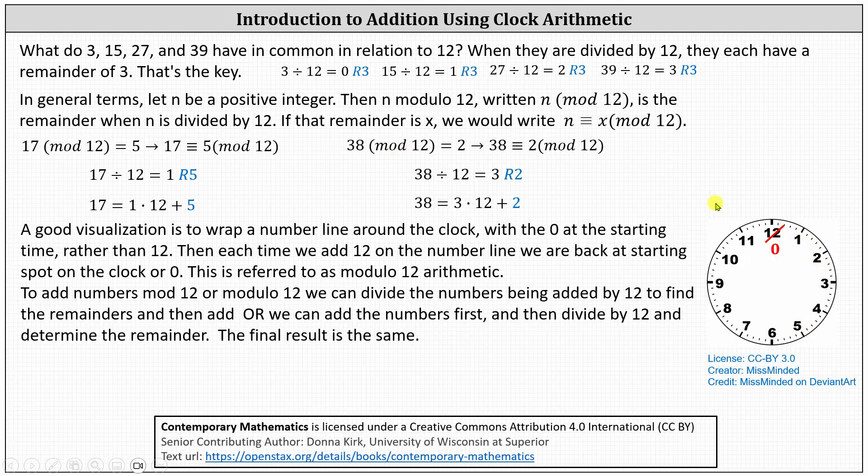For 38 mod 12, we'd start at 0. Because 38 divided by 12 is 3 with the remainder of 2, three complete rotations around the clock would be 36 hours. And then 37, 38 hours, the hour hand points to the 2, indicating 38 mod 12 equals 2.